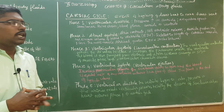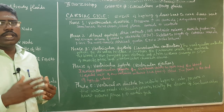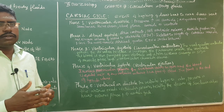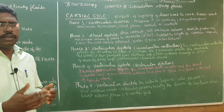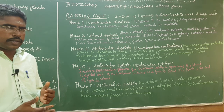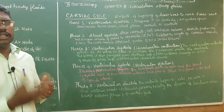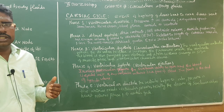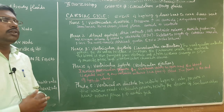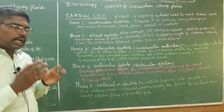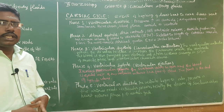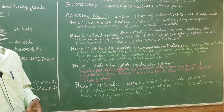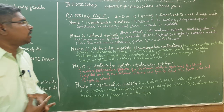In the cardiac cycle, we start with 5 phases: phase 1, phase 2, phase 3, phase 4, and phase 5. These 5 phases make up the complete cardiac cycle.